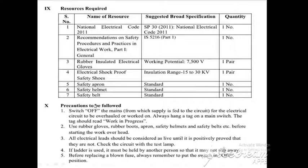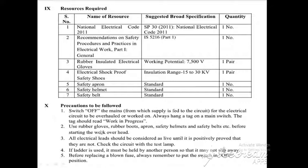Next are precautions to be followed. While working in electrical installation, precaution number one: switch off the main supply or main switch from which supply is fed to the circuit to be overhauled or worked on. Always hang a tag on the main switch — the tag should read 'work in progress.' Also use rubber boots, apron, safety helmet, and safety belt before starting our electrical work, meaning we wear the safety accessories before beginning work.